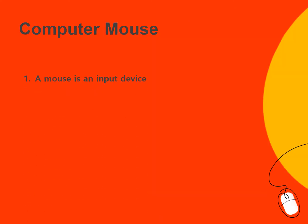A mouse is an input device. Input devices are used to send information or instructions to the computer. Mouse gives the computer different instructions, for example: opening or closing an icon, opening or closing a window, deleting a file, picking, copying, or pasting. So mouse is an input device which is used to give instructions or commands to the computer.